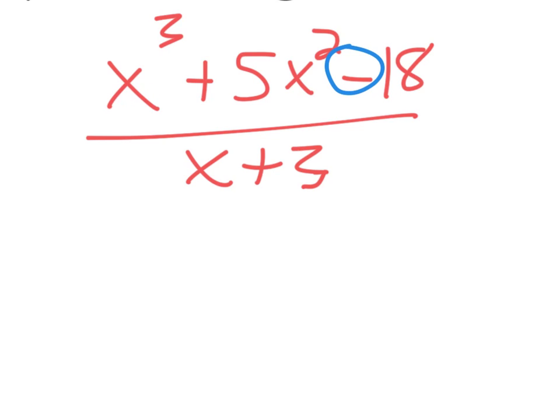It starts on x to the third, got an x squared, you need an x to the first, and then you need a number with no x. So you've got to have a missing piece here. So you can start by rewriting the problem like this.